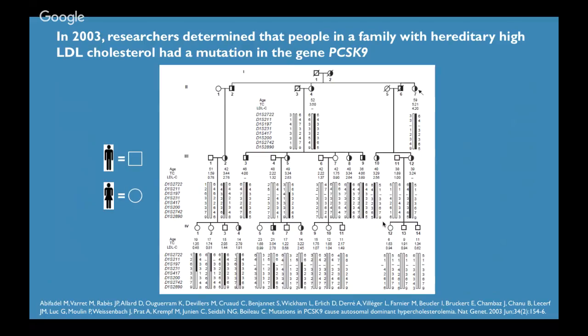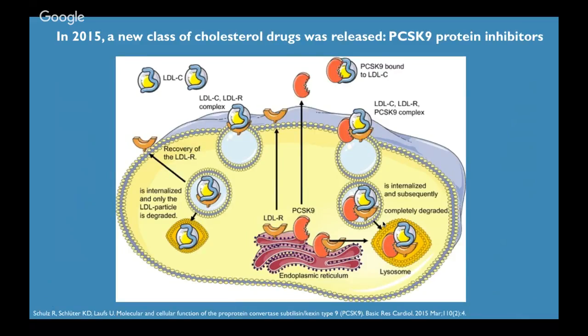One of my favorite examples: in 2003, researchers determined that people in a family with hereditary high LDL cholesterol had a mutation in the gene PCSK9. In this pedigree, the males are squares and the females are circles. They found a number of family members affected with high cholesterol and were able to pinpoint that those people had a mutation in this specific gene. That was in 2003 — a pretty exciting thing, because people are constantly worrying about their cholesterol and how to minimize their risk for heart disease.